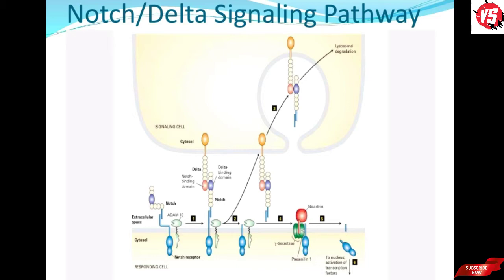Now we will discuss the Notch-Delta signaling pathway. Notch has a transmembrane unit and an extracellular sub-unit which is non-covalently associated. When Delta is absent, the non-covalent association is maintained. When Delta arrives and binds, the non-covalent protein unit is stretched. This ultimately leads to lysosomal degradation of that portion.